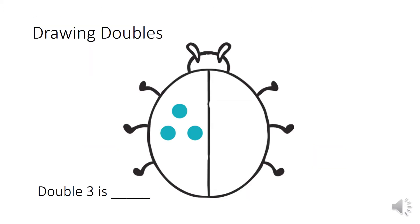We also looked at drawing doubles on ladybirds. We had to draw the second group on the second wing and then complete the sentence. What do I have to draw first on my ladybird? Three dots, well done. Then what number do I write in the sentence to complete it? Double three is six. Well done — did you count all the spots on the ladybird?